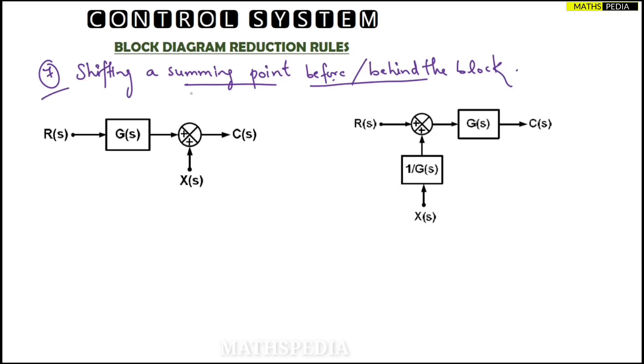Here we have the seventh rule, which is shifting the summing point before or behind the block. Here we are having the summing point. This has to be shifted over here before the block, which is the G(s). So when we shift over here, then you have to take the reciprocal of that transfer function and paste it over here. What I have done here, carefully observe.